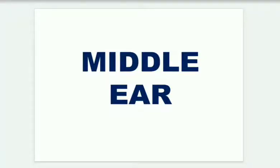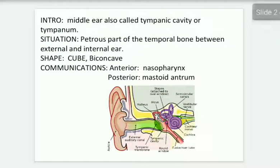Hello physios, today we learn anatomy of the middle ear. This is most important and can also be asked as a ten marker in exams. First, the introduction: the middle ear is also called the tympanic cavity or tympanum. It is filled with air and is situated in the petrous part of the temporal bone, between the external ear and internal ear. The shape is like a cube.